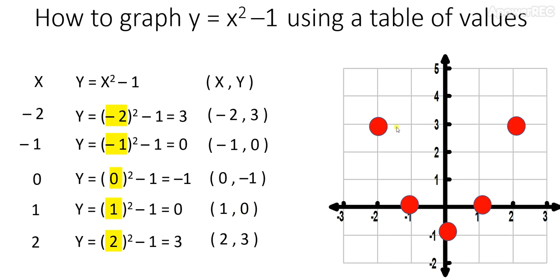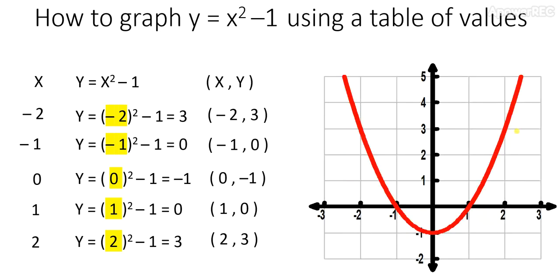You draw a nice smooth curve that joins all of these five key critical points. And if you do it correctly, it should look something like this. So, this is how you graph y equals x squared minus 1 using a table of values.